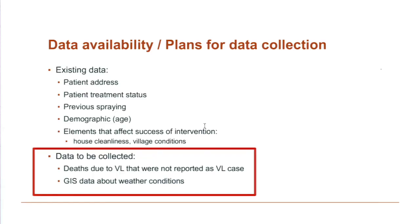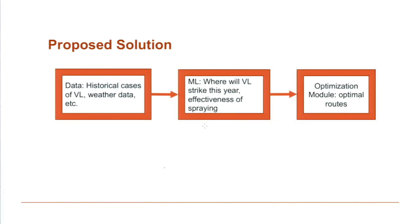We believe there is additional data we could collect to better inform our decision-making — in particular, deaths due to VL, which are cases not reported at the time they occur but that resulted in death. Also, additional data to understand factors affecting spraying efficacy, like weather conditions. We propose to take this historical data — historical VL cases, treatment outcomes, weather data, etc. — to train machine learning models that will help us understand where VL will strike in the current year.